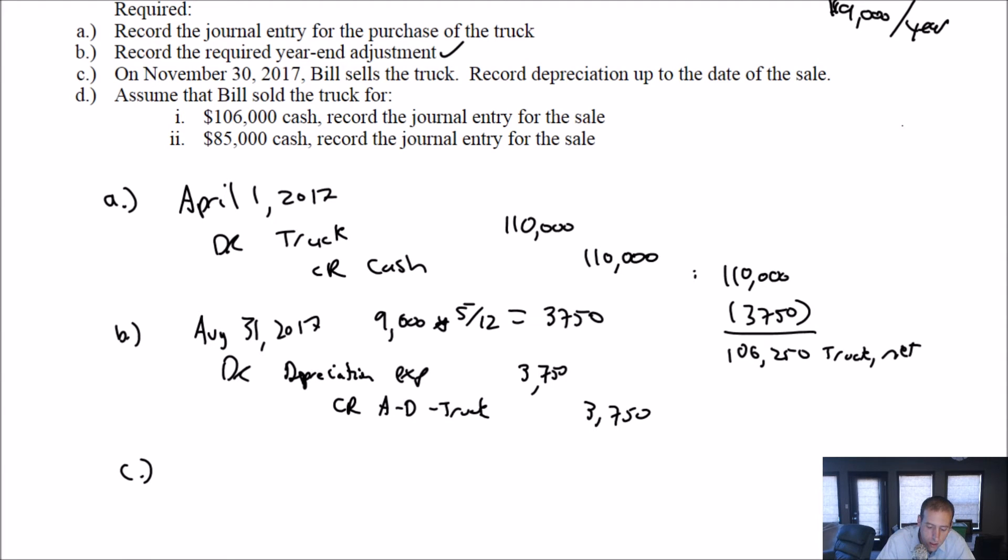Part C, on November 30th, Bill sells the truck. Record depreciation up to the date. It's August now. So August, September, October, November. It's three months after that.